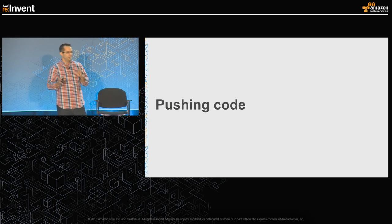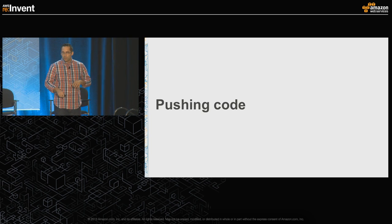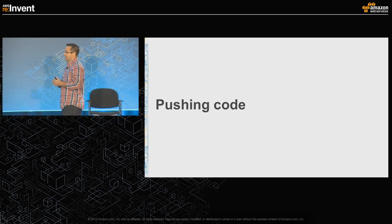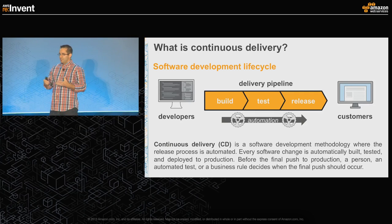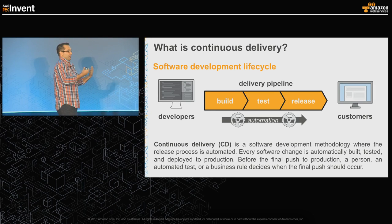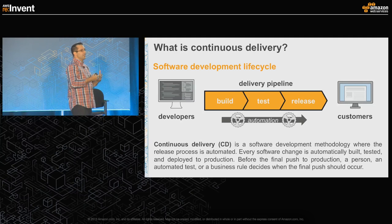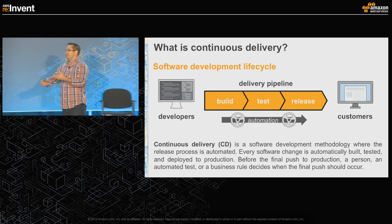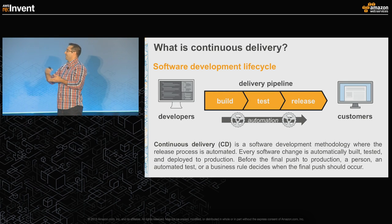Let's jump into pushing code. This section will end with a demo leveraging CodeDeploy — you'll see how from Visual Studio we can target EC2 instances with GitHub in the middle, taking this all the way through. First and foremost: continuous delivery. If we're talking DevOps, we're talking continuous delivery, continuous integration, CI/CD — hopefully what you're looking to accomplish is increasing the frequency or velocity of this iterative approach from build, test, and release.